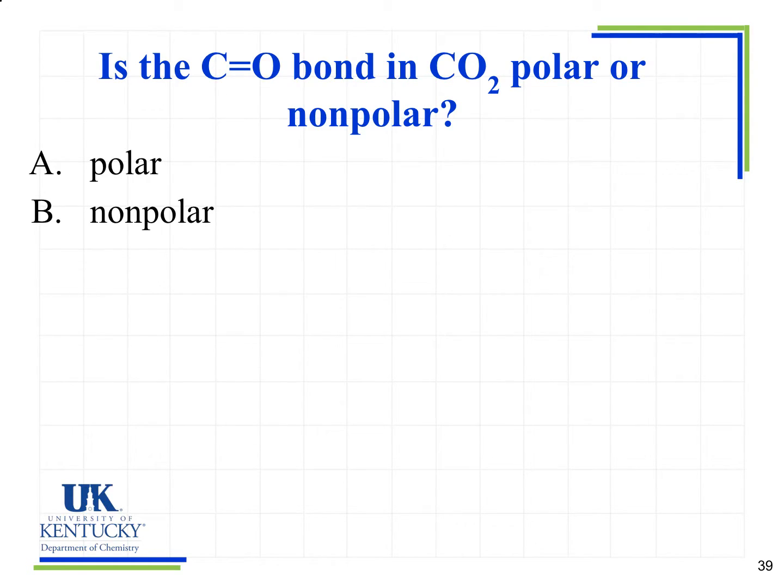We're looking at the carbon-oxygen bond in CO2. It might help if you draw the Lewis structure. Is it polar or nonpolar? We'll draw the Lewis structure of CO2. Remember, I'm just looking at one of the bonds, not the overall molecule yet. When I look at just that bond, carbon and oxygen have different electronegativity values. Therefore, that will be a polar bond.